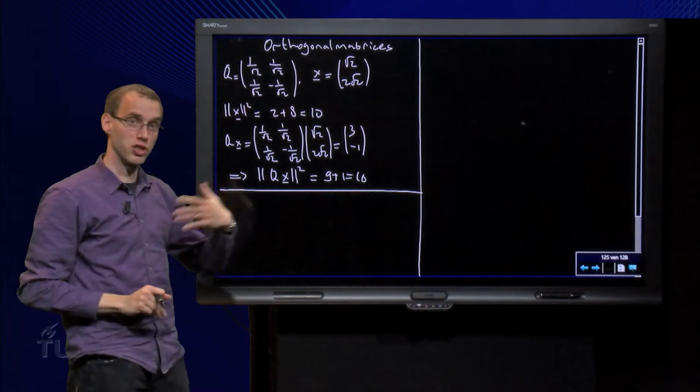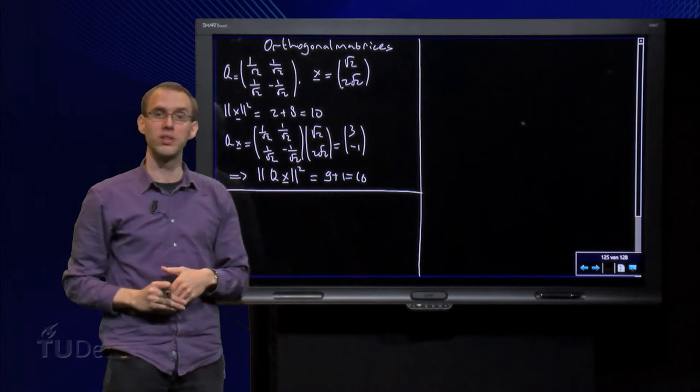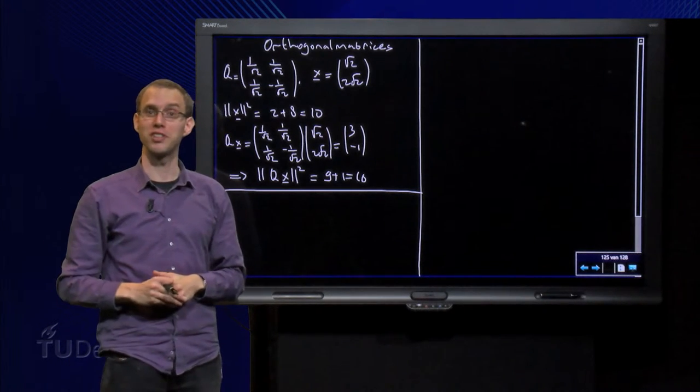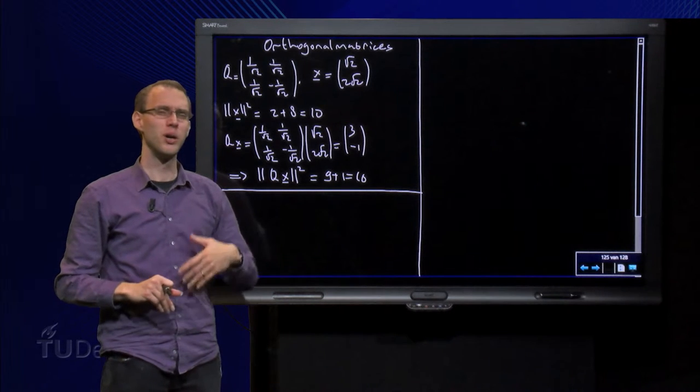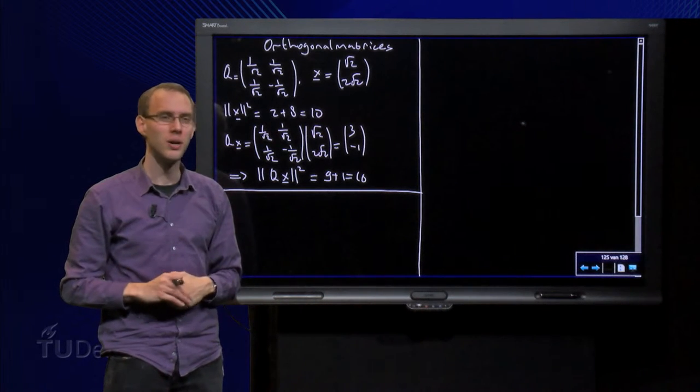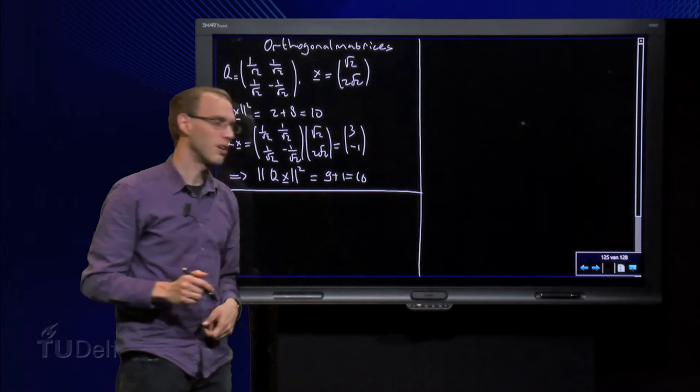So the length of x equals the square root of 10, and the length of Q times x also equals the square root of 10. Is that a coincidence? Let's take a closer look.